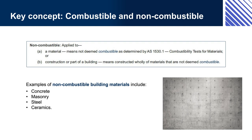Non-combustible materials may be required in isolation or as an addition to a requirement for an element to have an FRL. The fact that a material is classed as non-combustible does not imply that the material has an FRL. If the provisions require use of a non-combustible material with a certain FRL, you must use a material that clearly meets both of these criteria. There is a concession for certain types of combustible materials, which is discussed shortly.